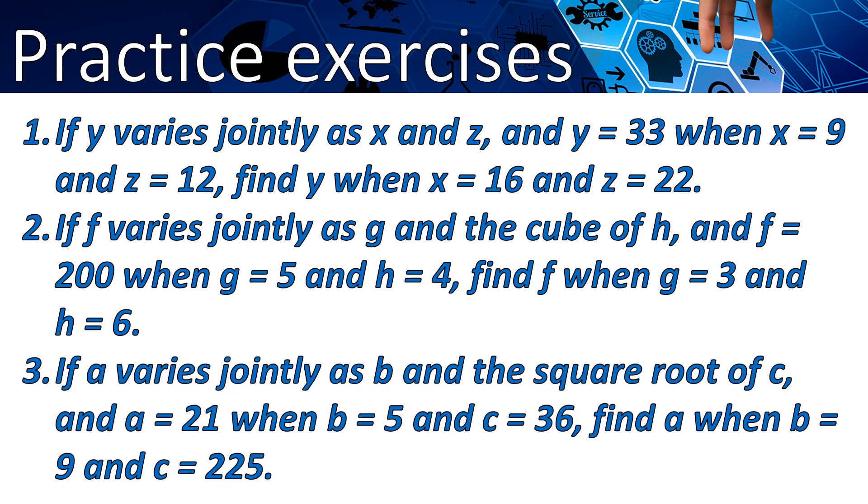Number 3. If a varies jointly as b and the square root of c, and a equals 21 when b equals 5 and z equals 36, find a when b equals 9 and z equals 225. That would be all. Thank you.